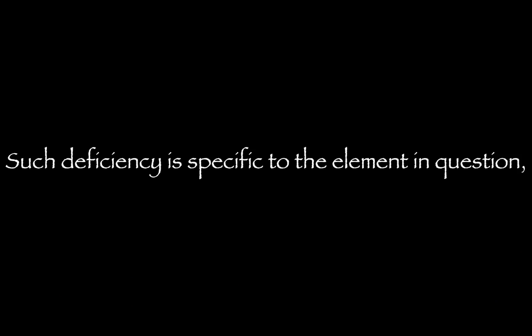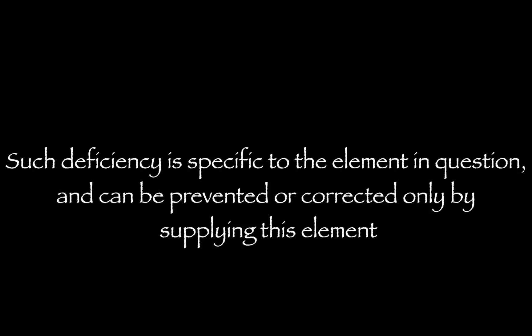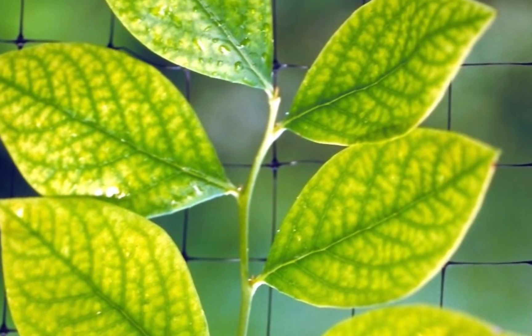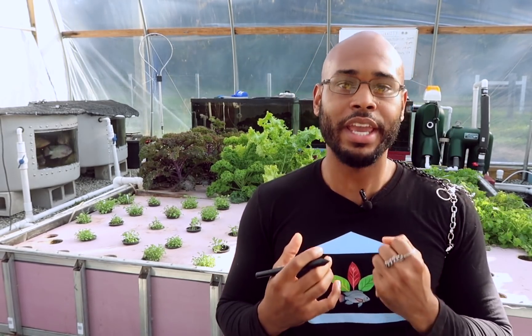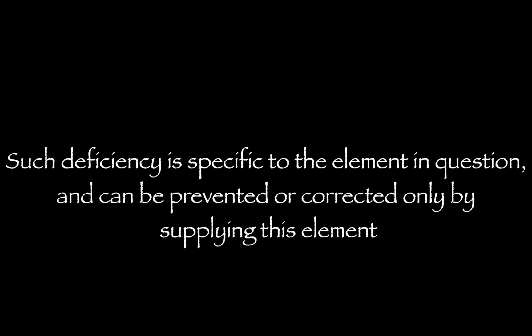The second criteria is: such deficiency is specific to the element in question and can be prevented or corrected only by supplying this element. For instance, if we have interveinal chlorosis — yellowing in between the veins of the newer growth — that deficiency can only be prevented or corrected by a particular element being supplied. We know this element to be iron. If iron is lacking in the system, this deficiency will occur. If it is supplied adequately, this deficiency will be corrected or prevented.